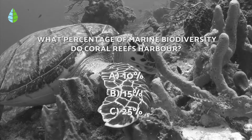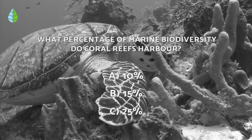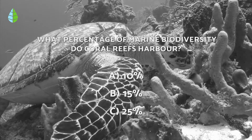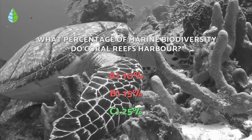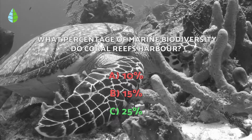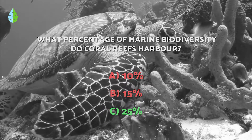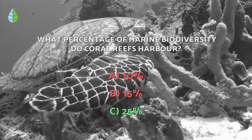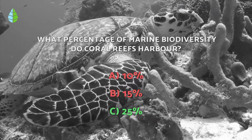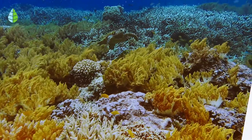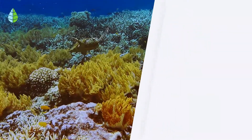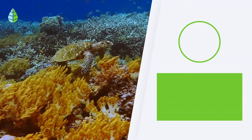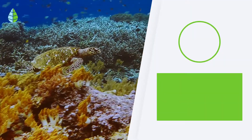And going back to the question we had asked you before, have you thought about it? The correct answer is C. Coral reef ecosystems host up to 25% of the total marine biodiversity that exists in the oceans. So tell us, did you know the importance of coral reefs? We hope you enjoyed this video, and we'll see you in the next one.